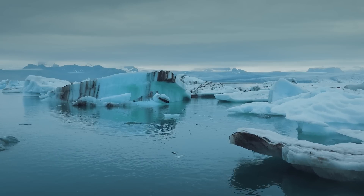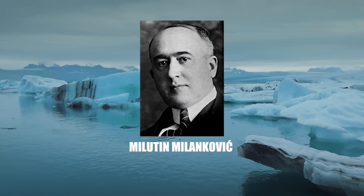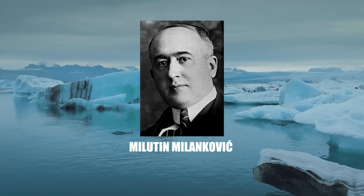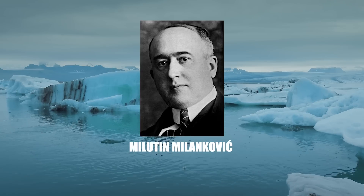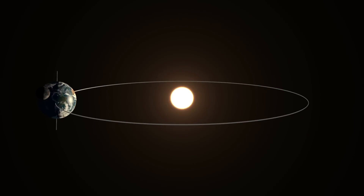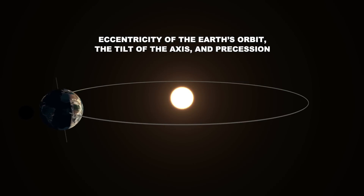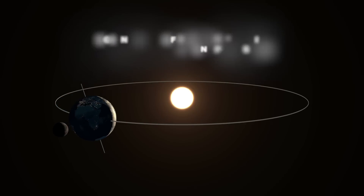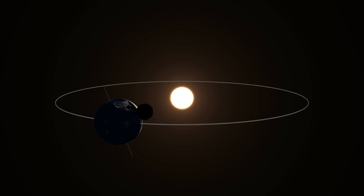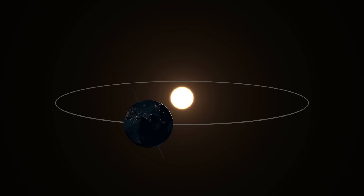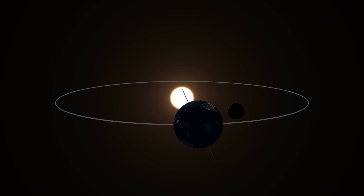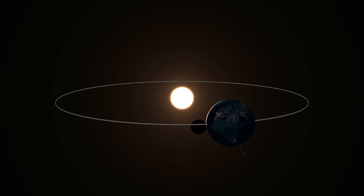The French geologist Milutin Milankovic was key to explaining these climatic cycles by developing the theory of Milankovic cycles. This theory posits that changes in the eccentricity of the Earth's orbit, the tilt of the axis, and precession influence glacial and interglacial periods. Paleoclimate studies have corroborated this theory, showing that changes in solar radiation are a major force behind Earth's warming and cooling cycles.